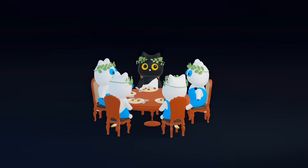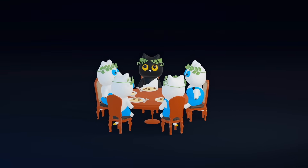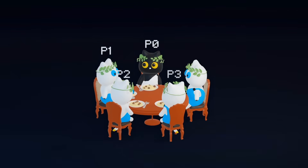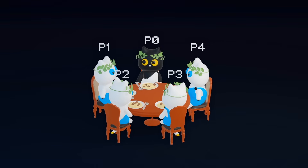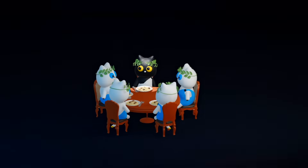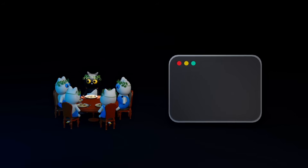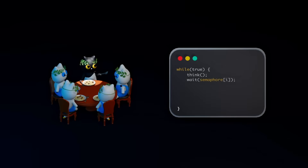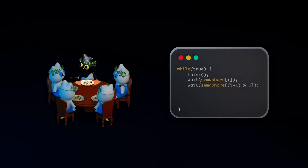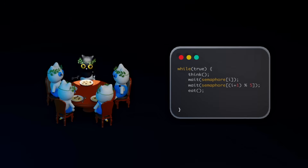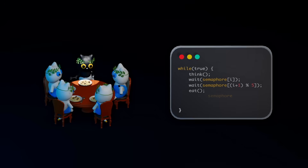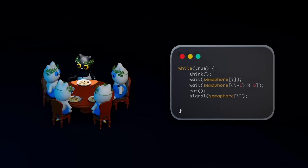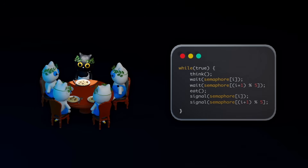Now we can start by designing a simple solution to let the philosophers eat. Assume every philosopher has an index from 0 to 4 inclusive. Each philosopher will execute this procedure as follows: in an infinite for loop, the philosopher starts from the thinking state. He attempts to pick up the left fork, then the right, then eats once he has both. After the philosopher is done, he releases the left fork, then the right, and the cycle repeats.